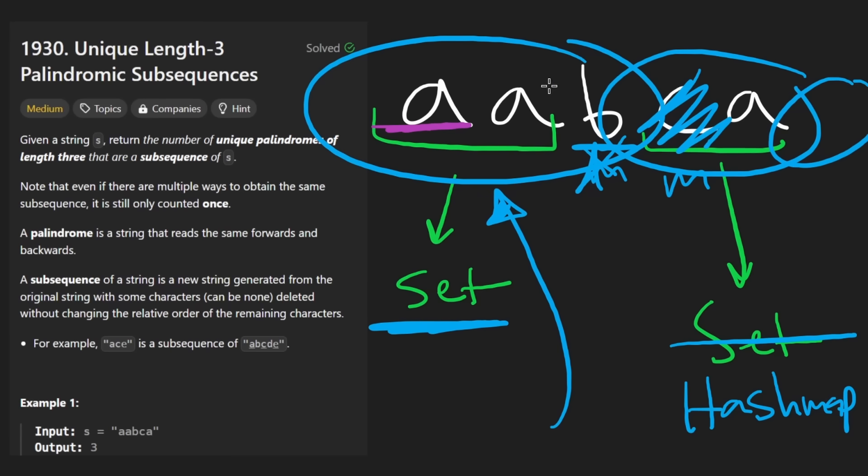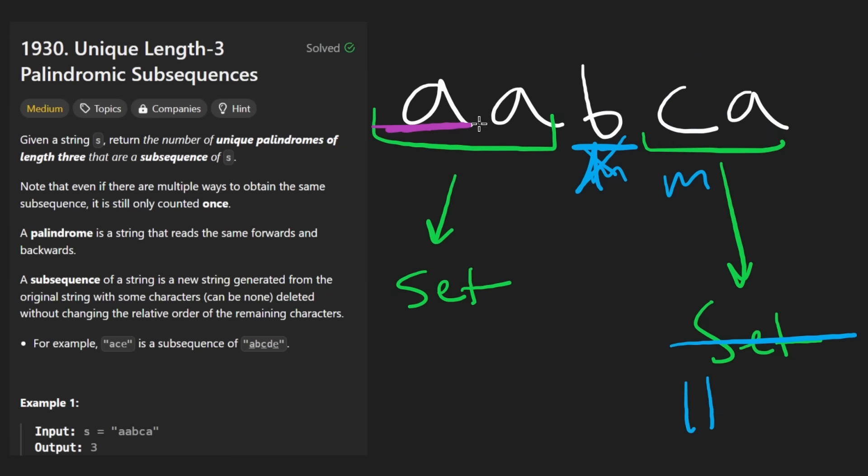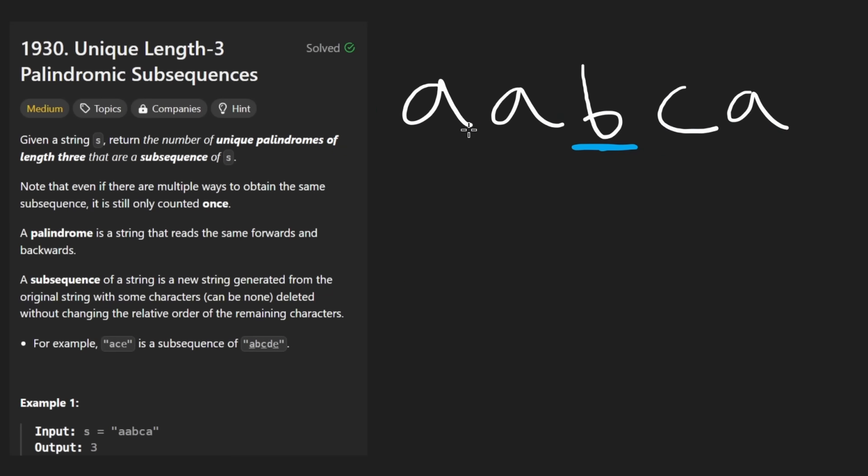Well, if I have multiple occurrences of the C, I want to be able to somehow track that. On the left side, it doesn't matter. We can use a hash set because we're never removing characters from the left side. We're only adding characters. If I have multiple A's on the left side, it doesn't actually matter.